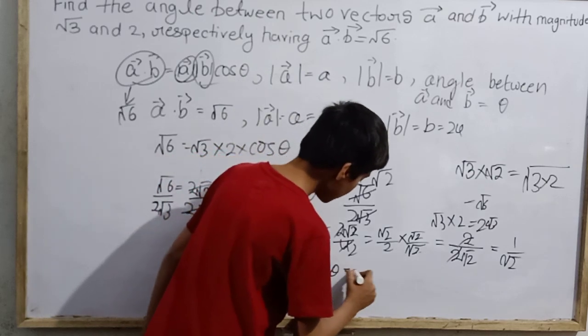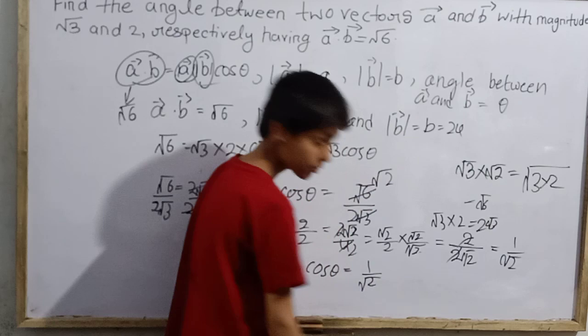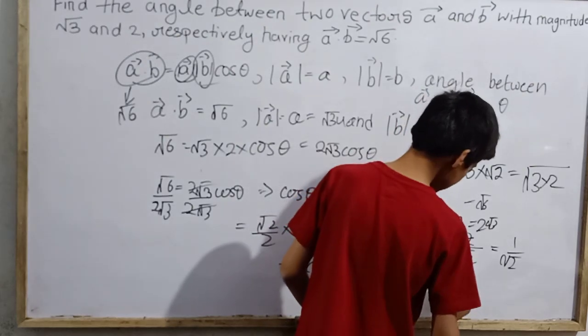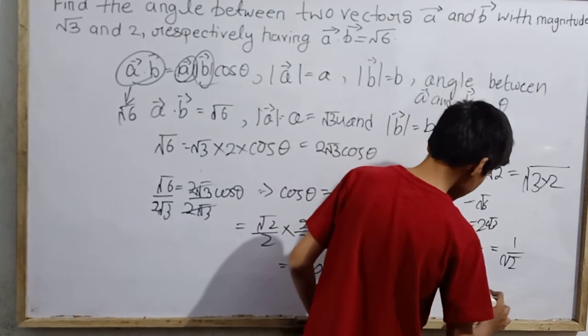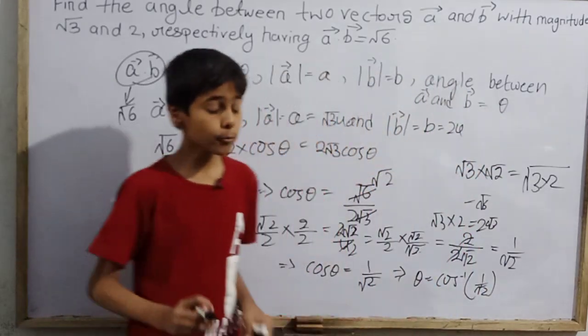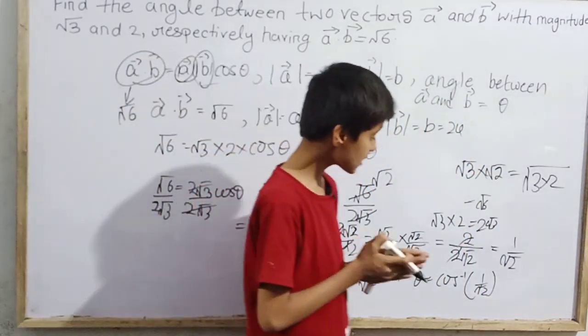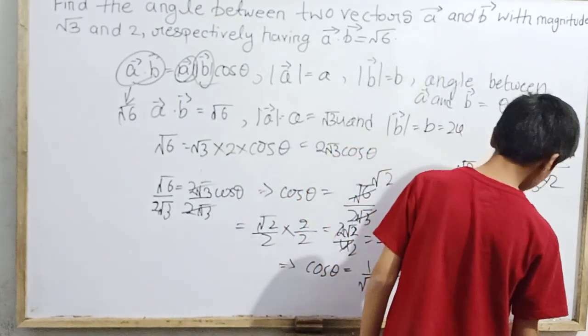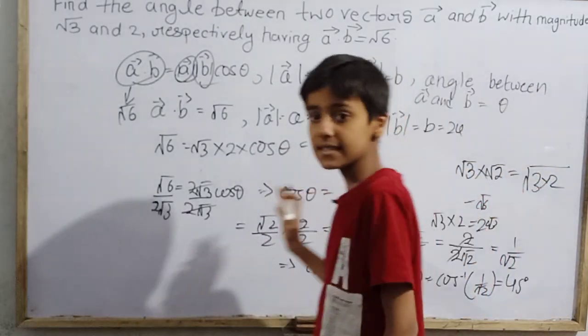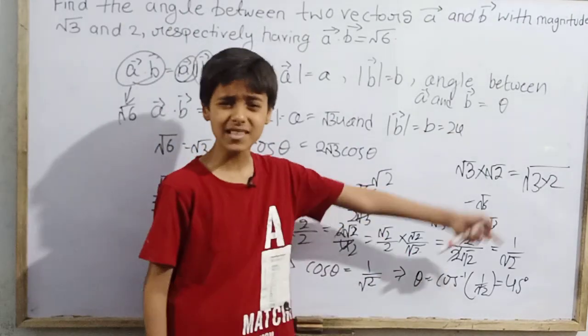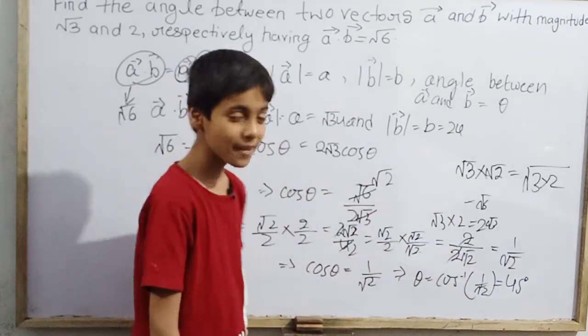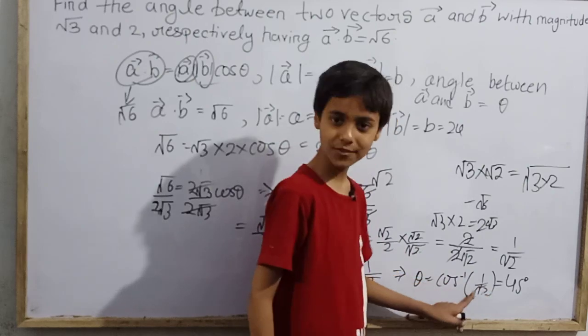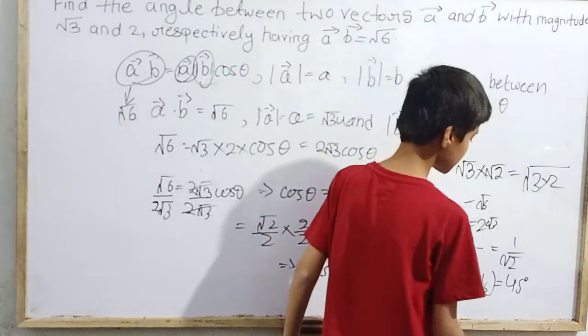Cos theta is 1 by root 2. Now what I will do is cos inverse. So theta is cos inverse of 1 by root 2. So of course 45 degrees. Cos inverse of 1 by root 2 is 45 degrees.